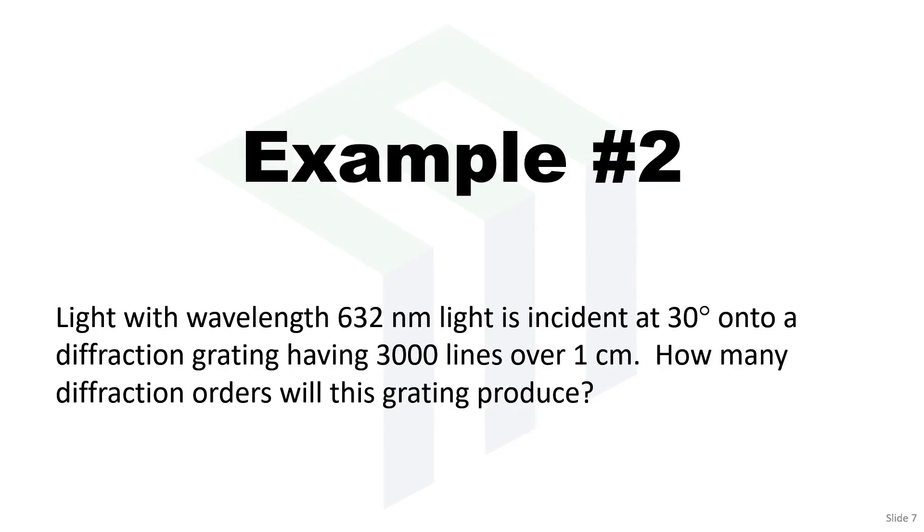Example number two. This is a good example because it involves counting the number of diffraction orders based on your configuration of diffraction. So I'll read this to you. Light with wavelength of 632 nanometers, so that's red light, is incident at 30 degrees onto a diffraction grating that has 3,000 lines over one centimeter. The question is, how many diffraction orders will this grating produce?